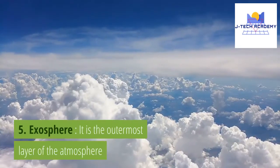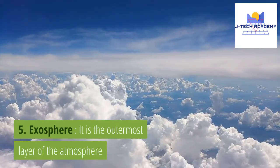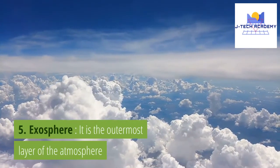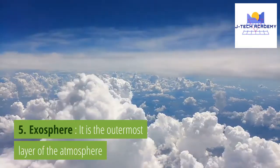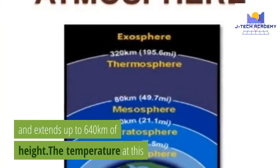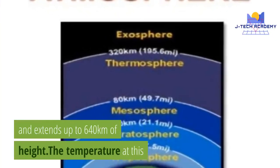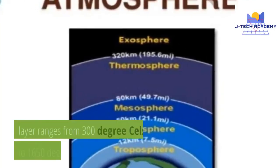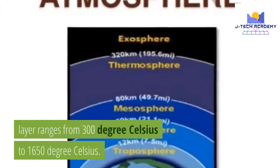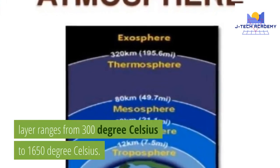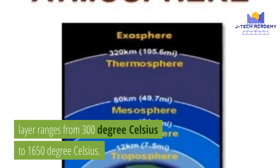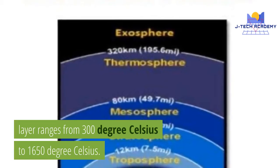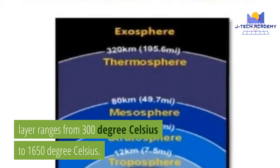5. Exosphere. It is the outermost layer of the atmosphere and extends up to 640 km in height. The temperature at this layer ranges from 300 degrees Celsius to 1650 degrees Celsius.